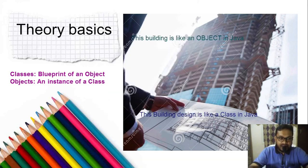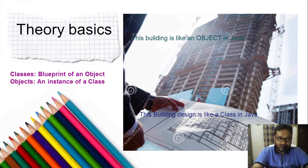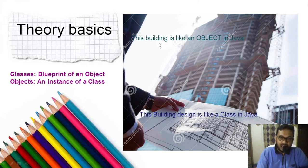So what is a class actually? A class is nothing but a blueprint of an object. Please give this answer — a class is a blueprint of an object, and an object is an instance of a class. To explain these two terms, we can see a particular building and its blueprint. This building is like an object in Java, while this architectural design is the class. From one blueprint we can create n number of buildings; similarly, from one class n number of Java objects can be created.